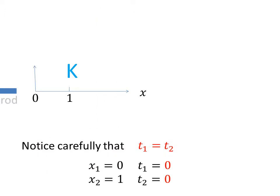Suppose the spatial and temporal coordinate values of the two ends of a rigid rod are known in the stationary system K, and they are x sub 1 equals 0, x sub 2 equals 1, when times t sub 1 and t sub 2 both equal 0.